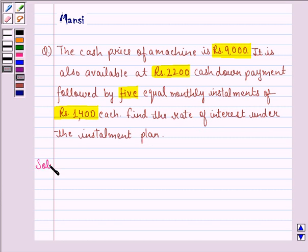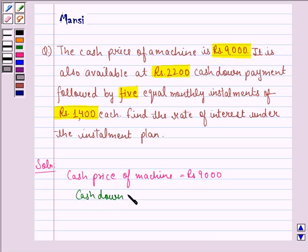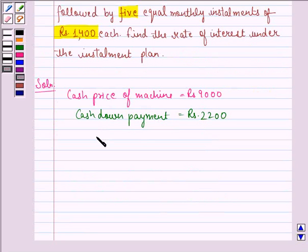Let's start with the solution. The cash price of the machine is Rs 9,000. A cash down payment of Rs 2,200 is available. Therefore, the balance amount is Rs 9,000 minus Rs 2,200, which equals Rs 6,800.